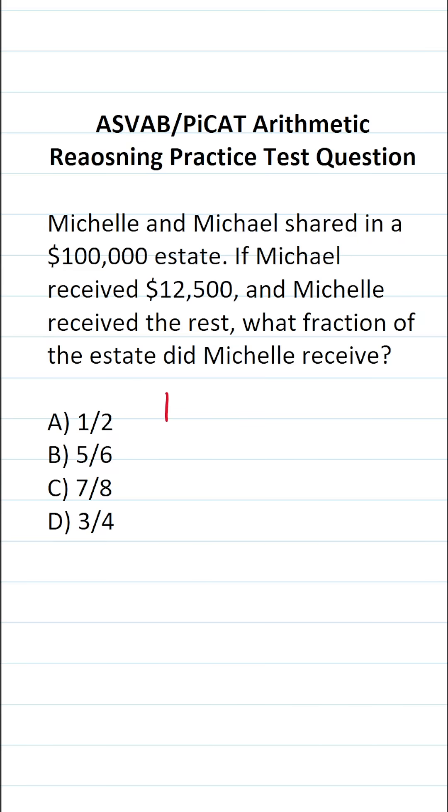The first thing we have to determine is how much money Michelle received. To do that, we're going to take the estate amount and subtract out Michael's share. So Michael received $12,500. If you can't do this one mentally, you have to do it the old fashioned way.